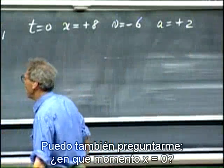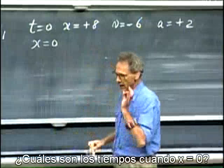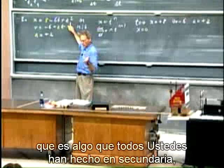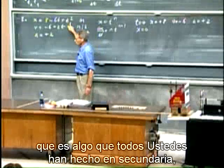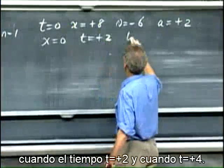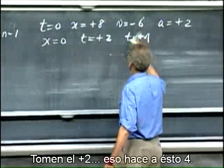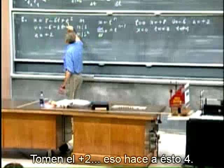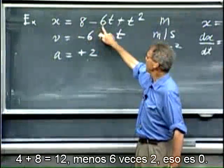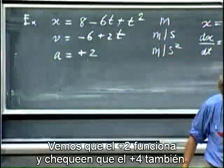I can also ask myself: at what time is x equal to 0? I have to solve this second-order equation, which you've all done in high school, and you will find that x equals 0 when time is plus 2 and when time is plus 4. Take t equals 2: that makes t squared equal 4; 4 plus 8 is 12; minus 6 times 2 is 12. So you see t equals 2 works, and you can check that t equals 4 also works.